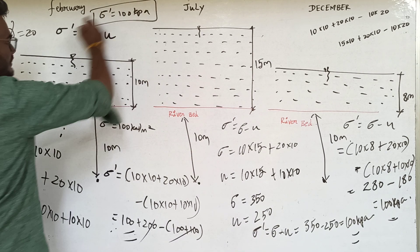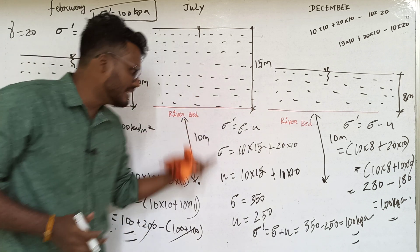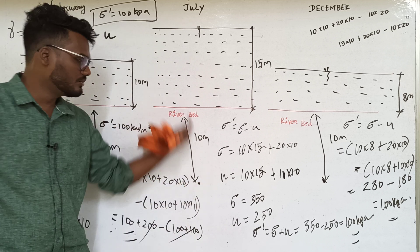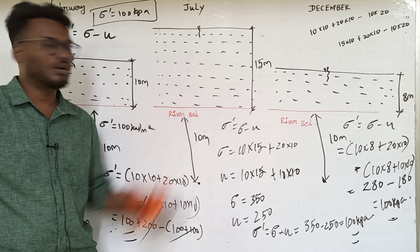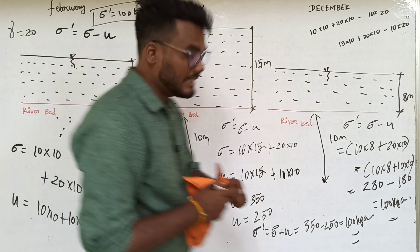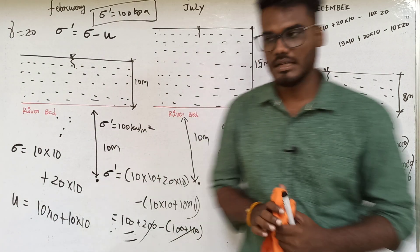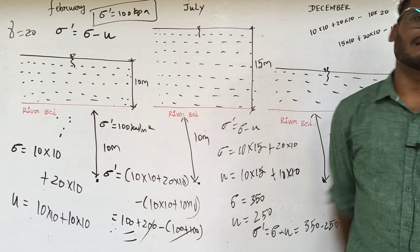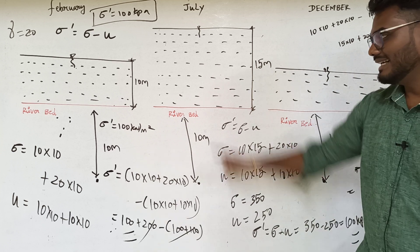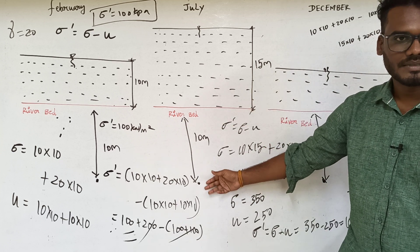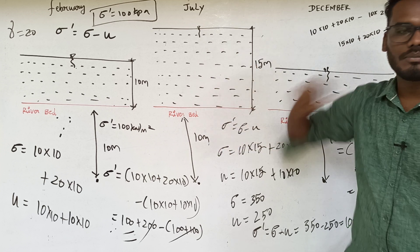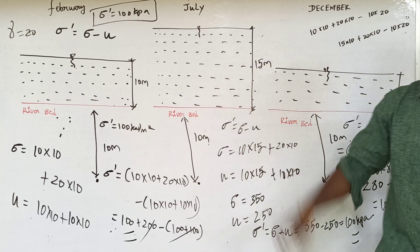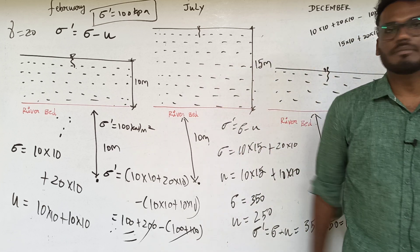This is the key concept: effective stress below the river bed is independent of the water table above the lake bed. Only the soil zone below matters. This particular question was asked in GATE 2005 by IIT Bombay — it is a very good concept. You can expect it in standard exams like TRB and GATE. I will meet you in the next session. Thank you.